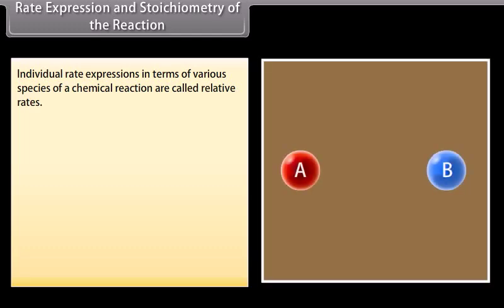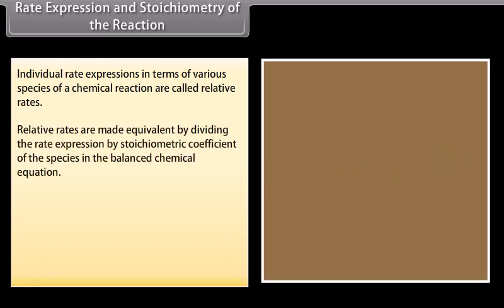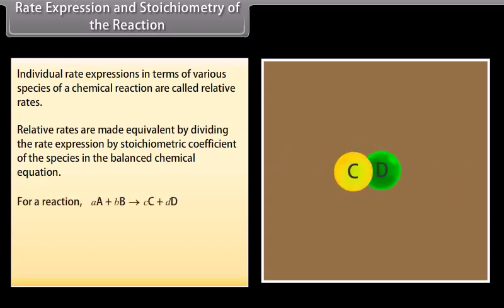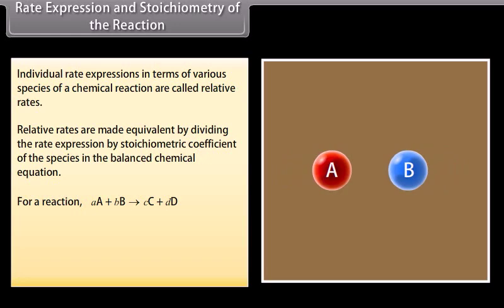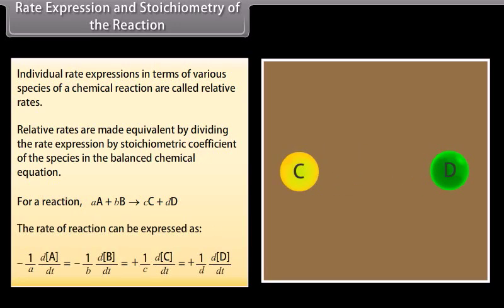Rate expression and stoichiometry of the reaction: individual rate expressions in terms of various species of a chemical reaction are called relative rates. Relative rates are made equivalent by dividing the rate expression by the stoichiometric coefficient of the species in the balanced chemical equation. For a reaction: aA + bB → cC + dD, the rate of a reaction can be expressed accordingly.